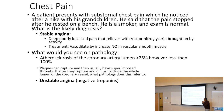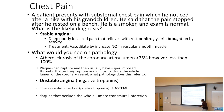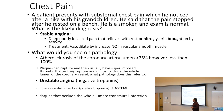The key thing that differentiates unstable angina from N-STEMI is the troponins. Subendocardial infarction gives you positive troponins — N-STEMI gives positive troponins — whereas unstable angina gives negative troponins. Plaques that occlude not partially but the whole lumen, you get a transmural infarction when we're talking about whole artery occlusion.